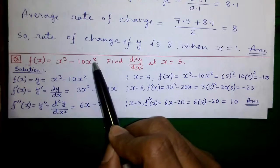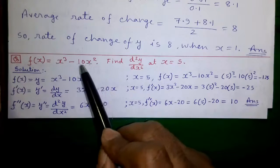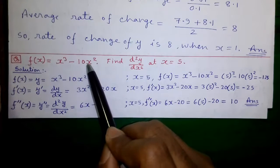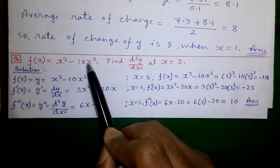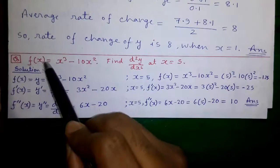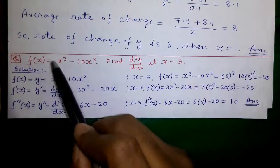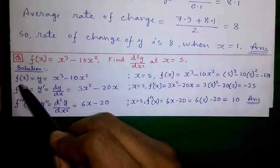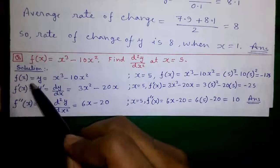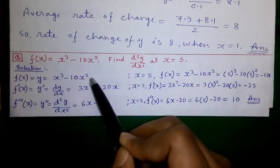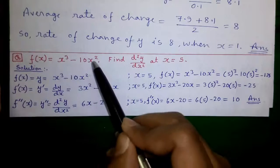A function is nothing but an expression or a polynomial of x where we put our desired value of x and get something in return. That something is called y or f(x), because x is the variable. So let's proceed to the solution: f(x), also called y, equals x³ minus 10x², as given in the question.